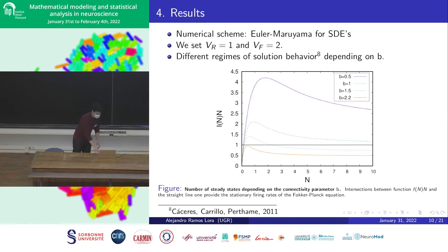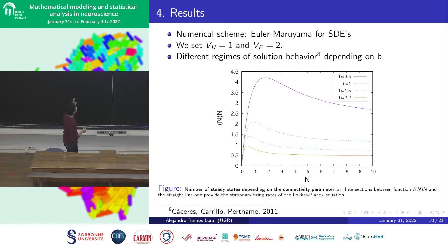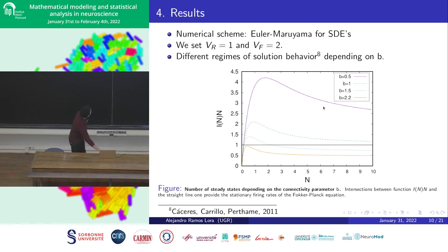For the numerical results, we used the Euler-Maruyama scheme for the stochastic differential equation, and we set the reset potential at one and the firing potential at two, so the difference between firing and reset potential is one. In this picture, you can observe that the intersection between the straight line y=1 and these curves means the number of existing steady states for that value of N. Depending on the connectivity parameter B, we have different regimes of behavior.